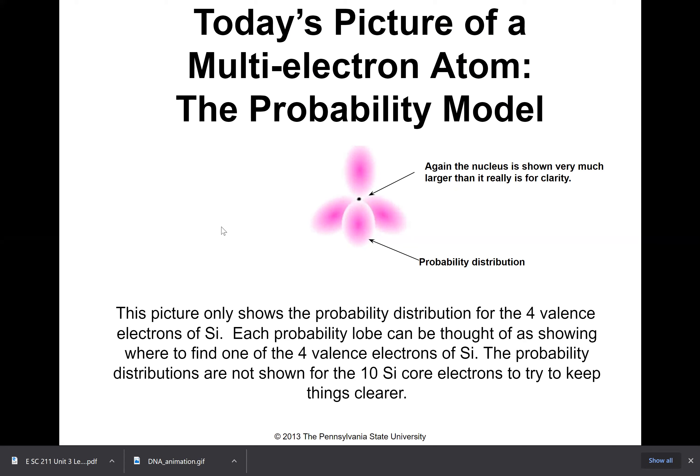Here is a picture of today's model of the atom for that same silicon atom. The previous one was shown in the planetary model. This one is shown using the current probability model or wave mechanical model, but they're only showing the valence electrons because to draw these weird lobes for all 14 electrons would be really difficult to do. They do not show the core electrons.